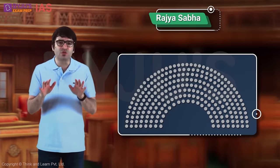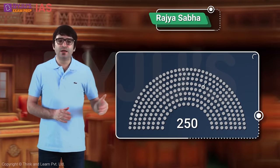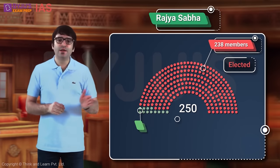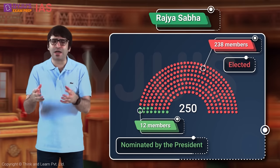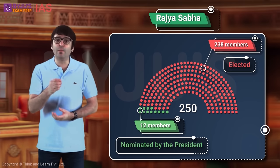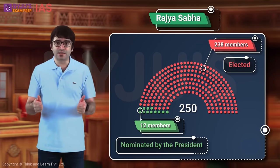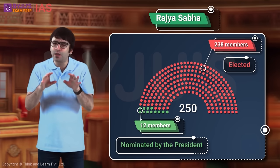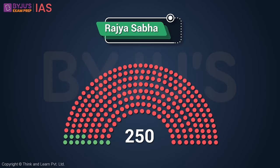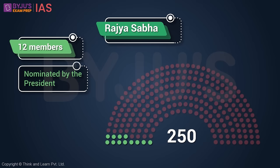Rajya Sabha, the House of Elders and Council of States: the maximum strength of Rajya Sabha is 250. Of these, 238 are to be elected and 12 members are nominated by the President on the advice of the Prime Minister and his Cabinet, from the fields of Art, Literature, Science, and Social Service. This is a unique feature of Rajya Sabha, ensuring that technocrats and experts become part of Parliament without needing to contest elections. It is mandatory for the President to nominate these 12 MPs.